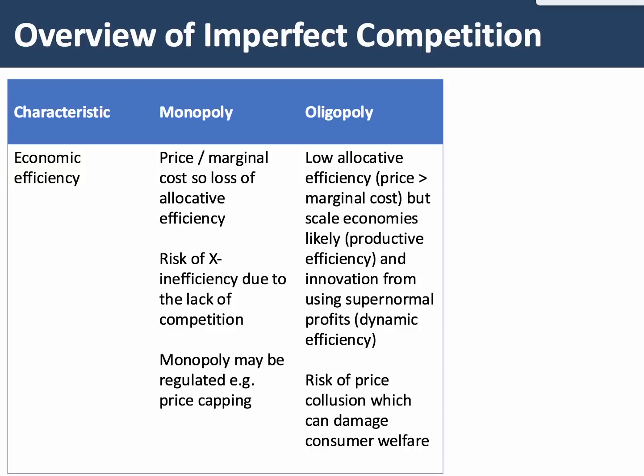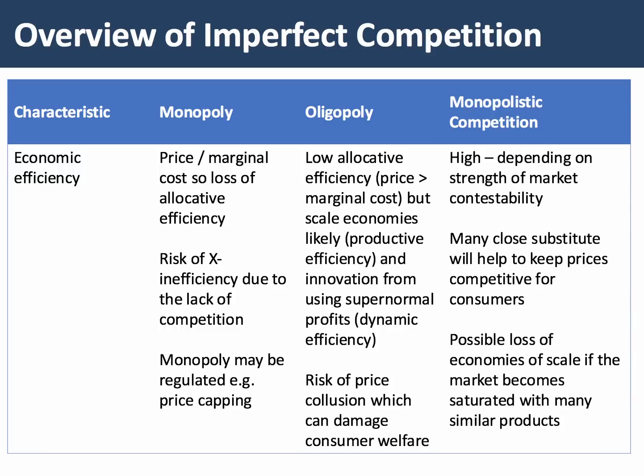However, there's a risk of price collusion, which can damage consumer welfare by keeping prices higher than they would otherwise be. In monopolistic competition, allocative efficiency is high — price is quite close to marginal cost, although that depends on the strength of market contestability. If firms think there's a genuine chance of new products entering, they may well price close to the competitive level. The high level of close substitutes helps keep prices competitive, which is good for allocative efficiency. But from a productive efficiency point of view, the saturation of the market with many similar products may reduce the use of economies of scale.